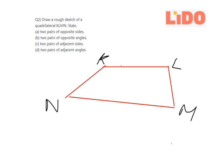Now what you have to state is, first of all, two pair of opposite sides. So the two pair of opposite sides are KL and NM and the next pair is NK and LM. Okay, so this is your answer to the first one.